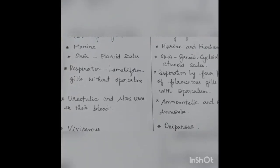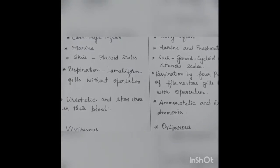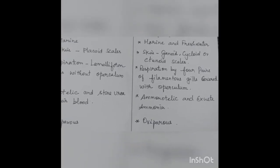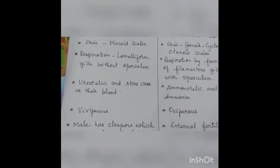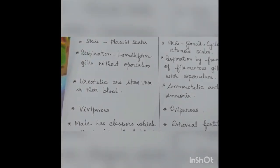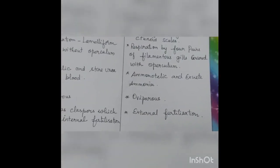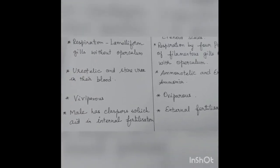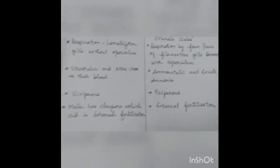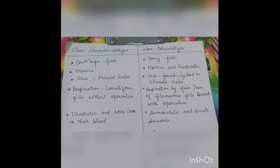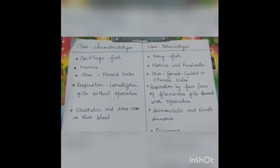Ureotelic means they excrete urea, whereas ammonotelic means they excrete ammonia. Cartilaginous fishes are viviparous — they give birth to young ones — whereas bony fishes are oviparous and lay eggs. In cartilaginous fishes, the male has claspers to aid internal fertilization, whereas in bony fishes the fertilization is external.